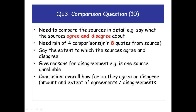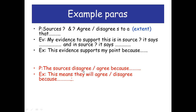Is the disagreement because one source is unreliable? Is one from a British perspective and the other from a German perspective? Then give an overall simple one-sentence conclusion. The layout has two sections: first, what the sources agree or disagree about and to what extent — that's Point-Evidence-Explain. Second, why they agree or disagree — that's just point and explain.